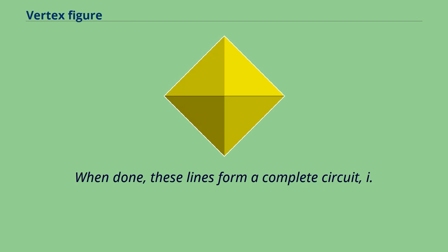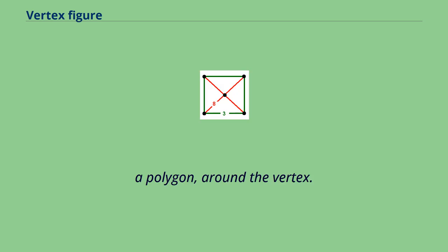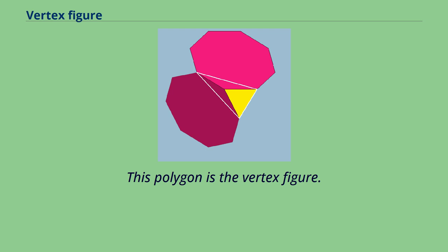When done, these lines form a complete circuit—that is, a polygon—around the vertex. This polygon is the vertex figure.